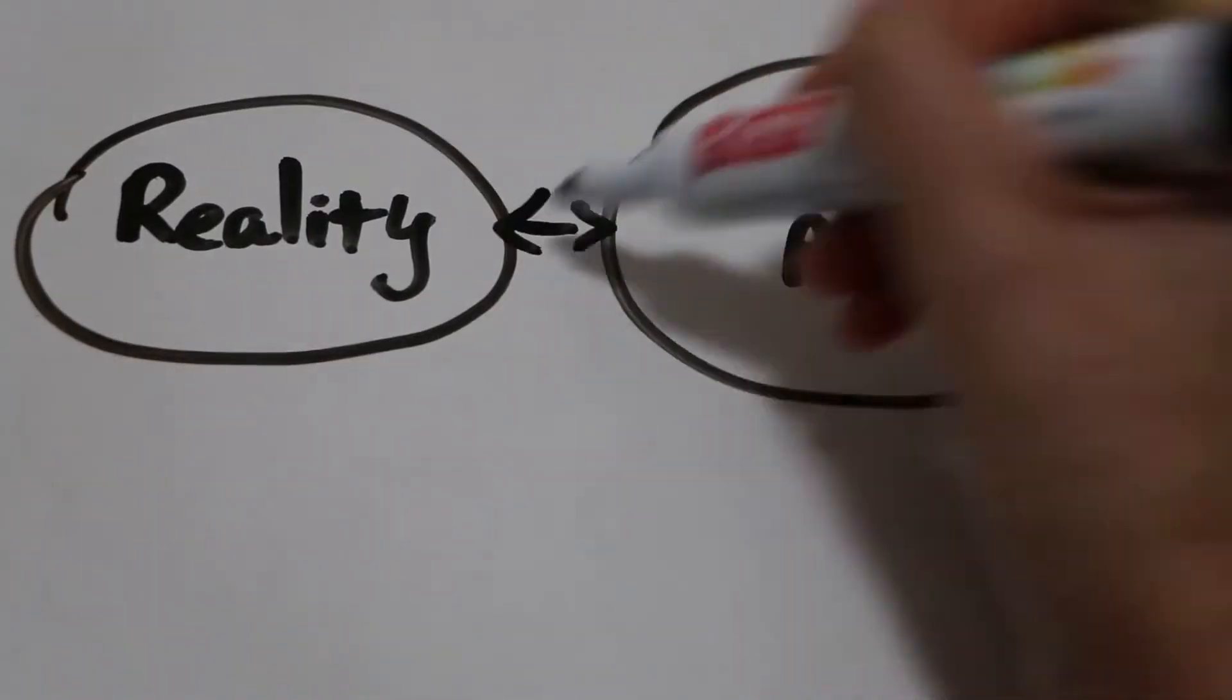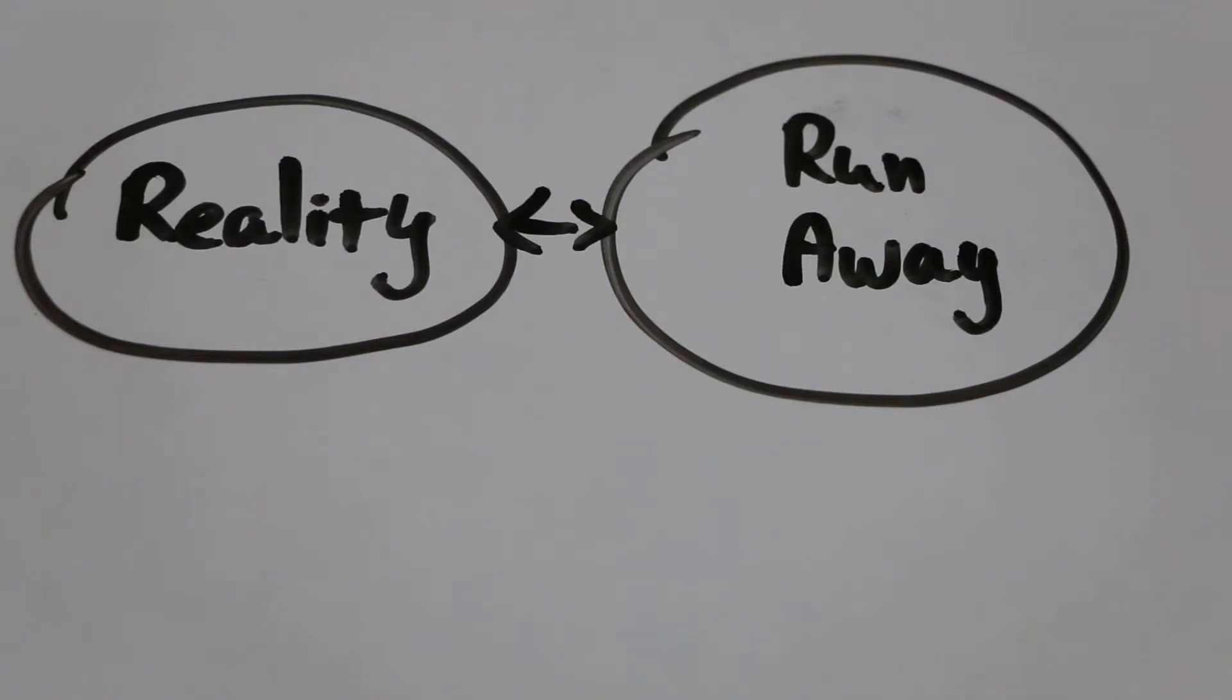There is a dissonance between his calculated cold reality to those moments when he runs away from it. It's like two personalities that live separately inside the same person.